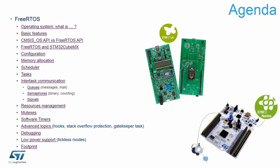Within STM32CubeMX and our examples available for all STM32 devices, we are using the CMSIS-OS API layer. This is why we will focus more on this part within this session. The next part covers STM32CubeMX and how to generate code with FreeRTOS, configuration parameters, and memory allocation schemes and techniques used within FreeRTOS.